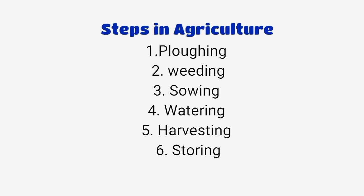The steps for agriculture are: plowing, weeding, sowing, watering, harvesting, and storing the crops. A farmer goes through each step from plowing to storing, and after this they can sell whatever crops they are growing.